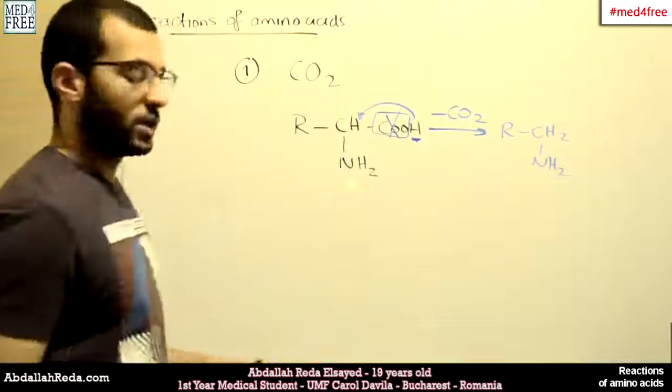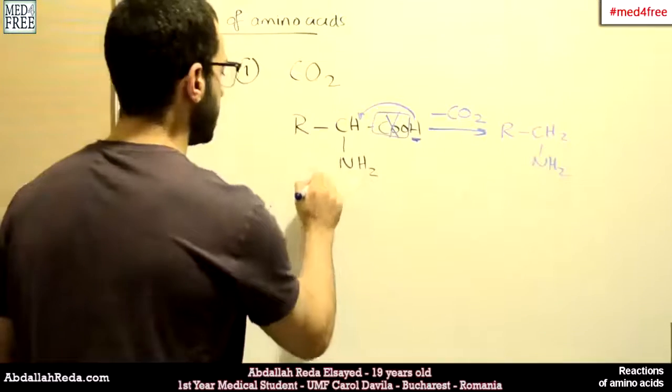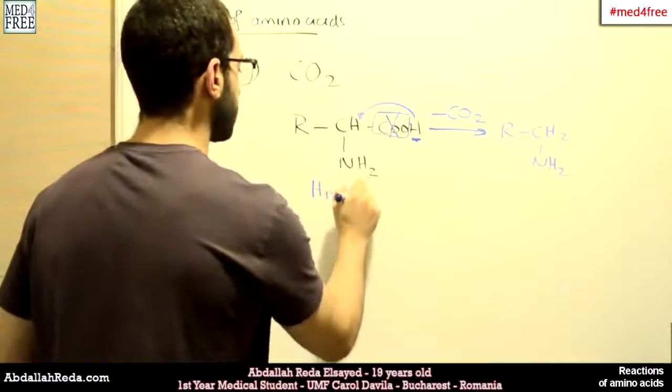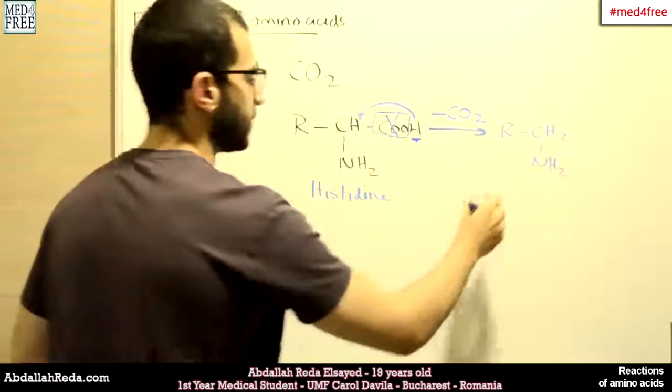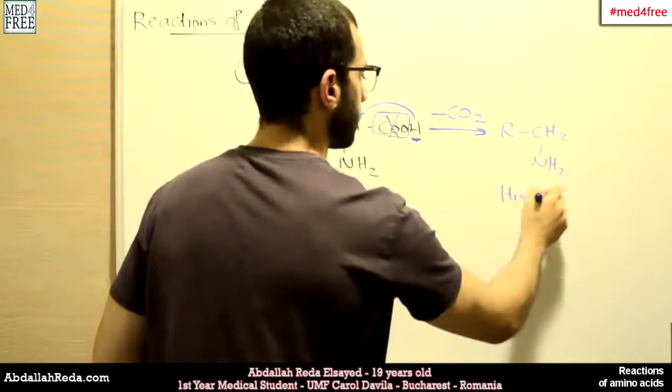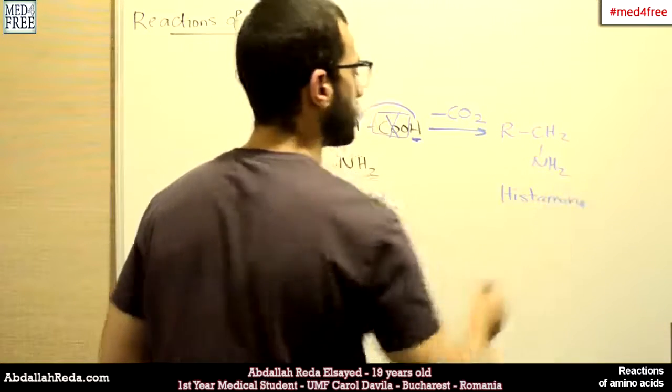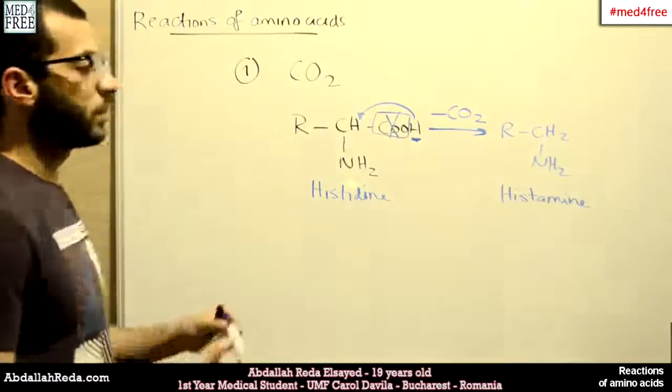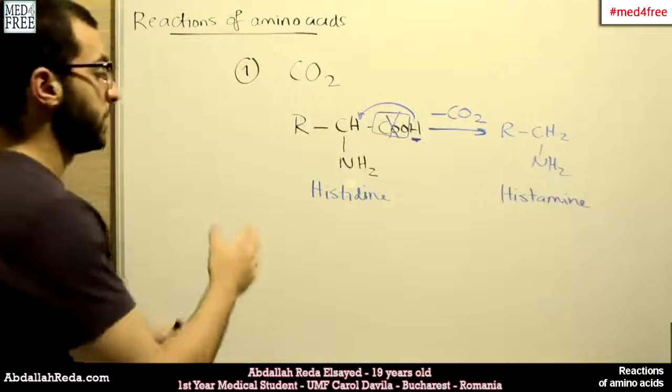And the name of the amino acid changes. For example, if this is histidine, it becomes histamine, and so on. So this is the first type of reaction, decarboxylation.